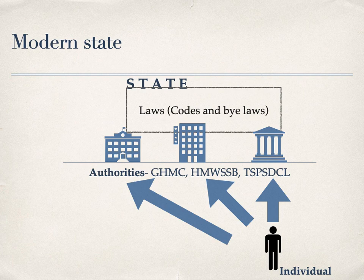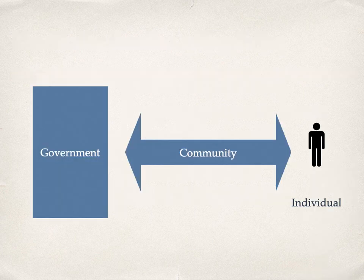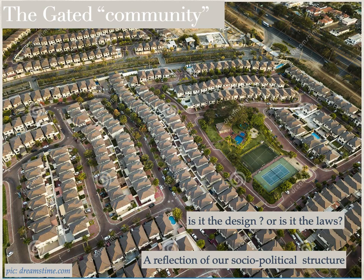On behalf of the state, various authorities enforce these laws. It is difficult for the average individual to negotiate with these multiple authorities. The professional — an architect, for example — is trained in the legalities of the building process and can help the individual negotiate them. Previously, the community formed the link between the individual and the state, whereas now professionals perform the same function. Design is often blamed for lack of community spirit in modern communities. But is it the design, or the laws that control development, that need to be revisited?